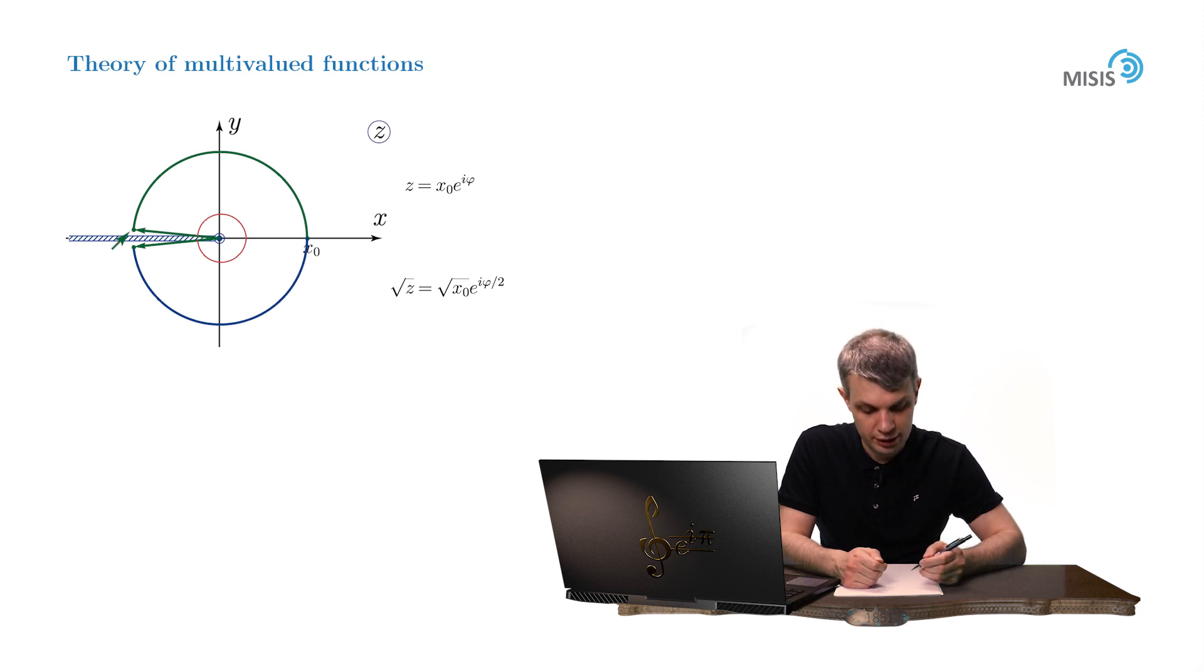The analytic continuation along the upper arc leads to a point on the upper bank of the branch cut, while the one along the lower arc leads to a point on the lower bank of the branch cut. Now they are separated by the infinitely small distance inside the branch cut.